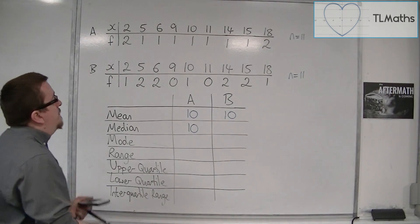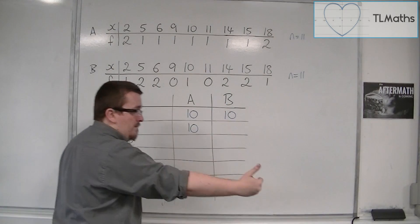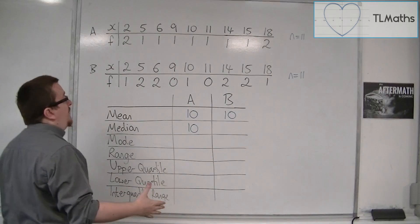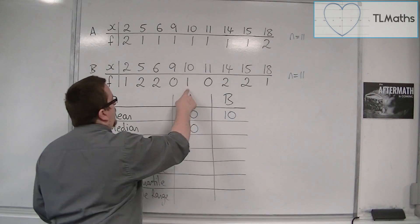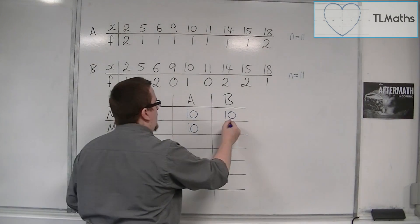Now, for B, we've got 11 bits of data. So add 1, half it. So we're looking at the 6th again. So 1, 2, 3, 4, 5, and 6. And so once again, the median is 10.